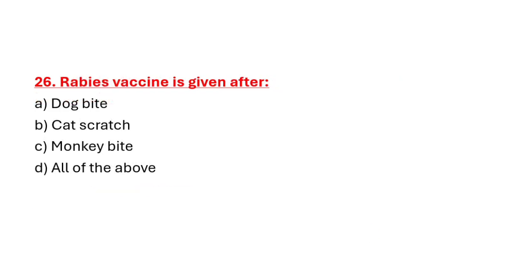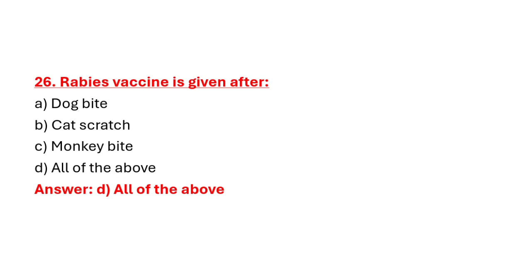Question 26: Rabies vaccine is given after. Option A: Dog bite. Option B: Cat scratch. Option C: Monkey bite. Option D: All of the above. Correct answer is Option D: All of the above.